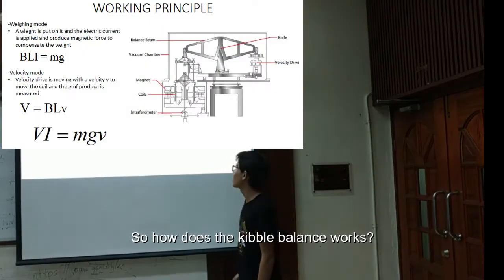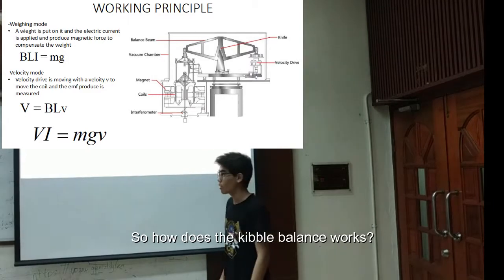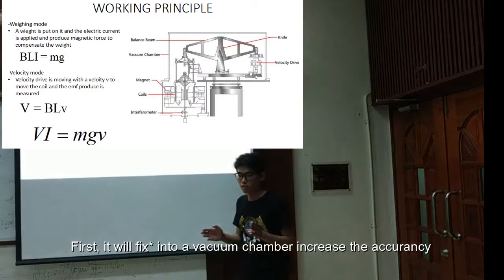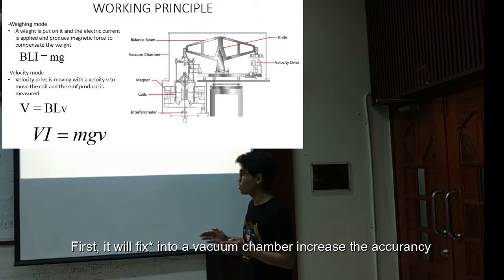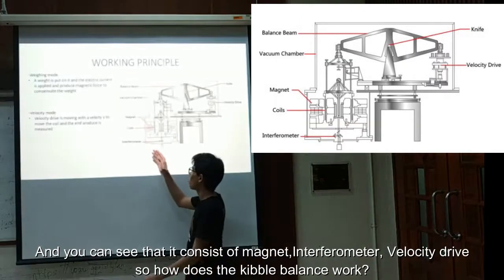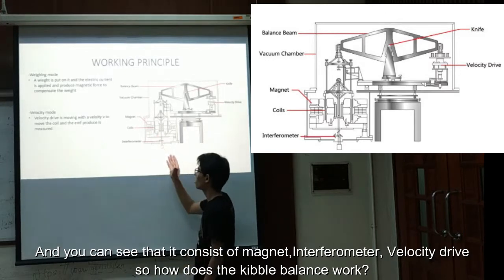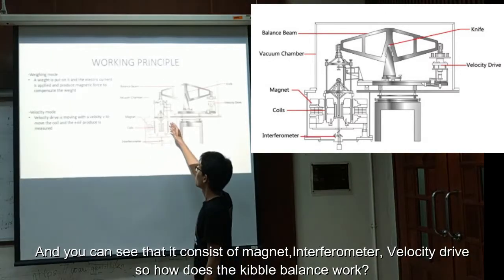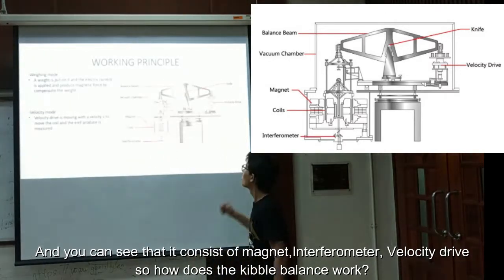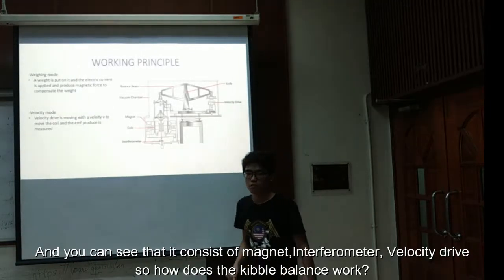So, how does the Kibble balance work? First, it is installed in a vacuum chamber to decrease temperature and decrease air resistance. Then, we can see that it consists of a magnet, coil, interferometer, and velocity drive.